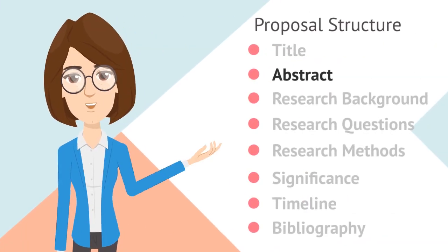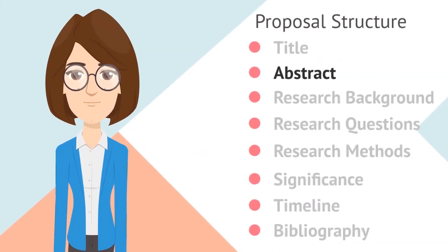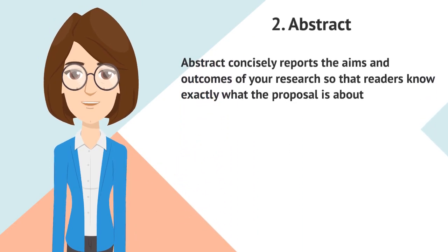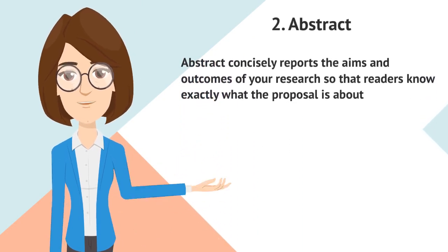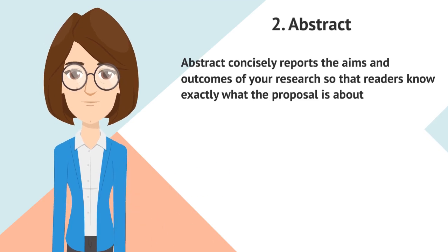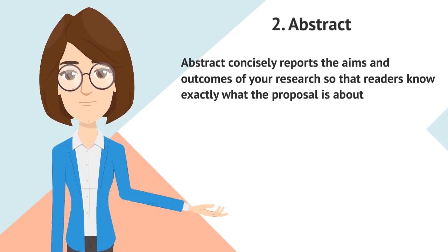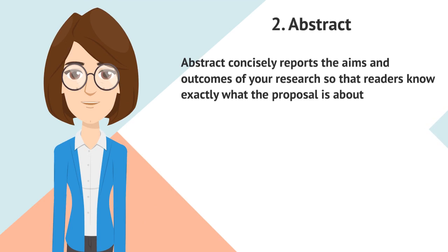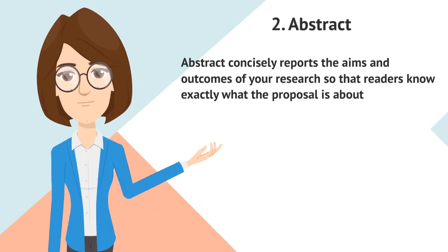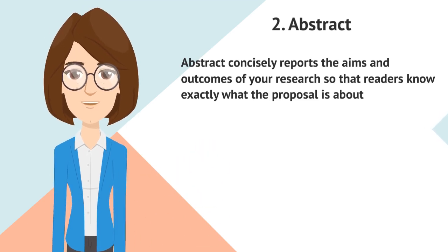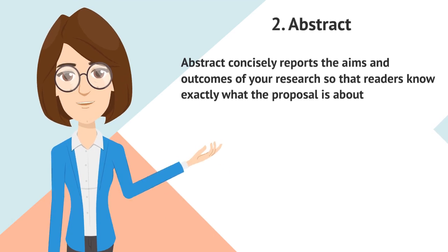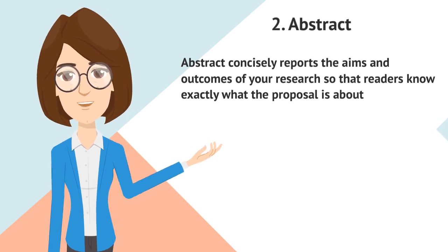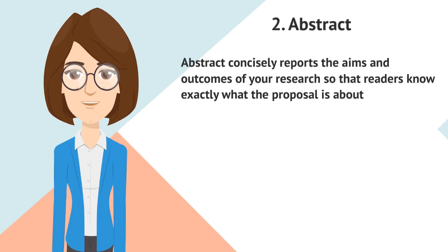Section 2 is the Abstract. An abstract is a short summary of a larger work. It concisely reports the aims and outcomes of your research so that readers know exactly what the proposal is about. Since this is a dissertation proposal, you can write a short summary about the issues you are concerned with and that you are going to be focusing on in this proposal.